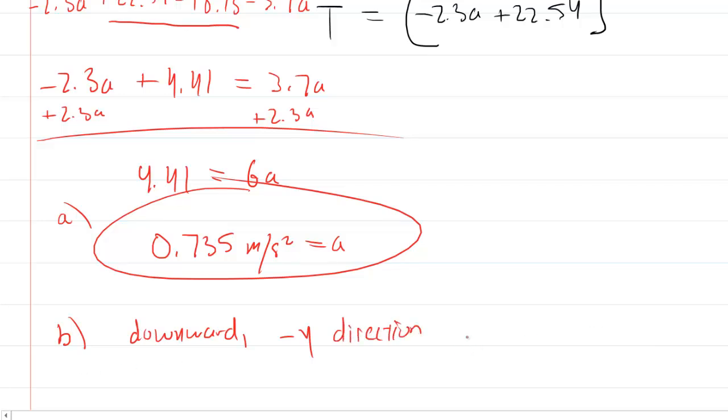Finally, in part C, we need the tension, but that's not going to be difficult. We have this equation right up here that we can use to solve for tension. So we say tension equals negative 2.3 times the acceleration that we just found plus 22.54. And when you work this out, you're going to find the tension is about 20.8 Newtons. So this would be the correct answer to part C.